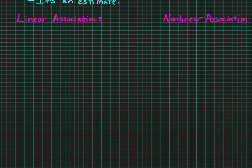Now, we can classify an association as being either linear, which means it forms a straight line, or non-linear, which means it would make a curve.